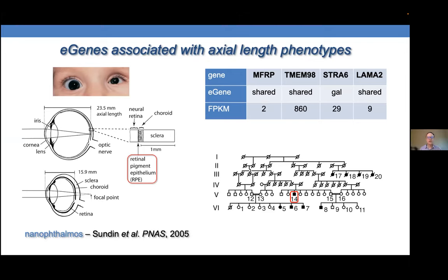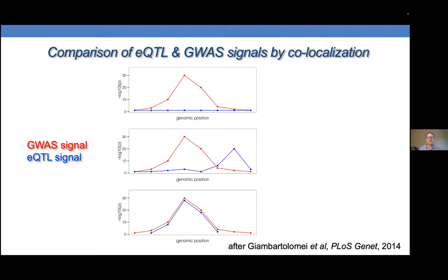With respect to complex disease, the co-localization approach is very powerful for understanding loci from GWAS studies. One can rigorously ask the degree of congruence between the eQTL signal and the GWAS risk signal in a genomic region. This approach helps identify the gene underlying risk at a locus, provides insight into mechanism by determining whether the risk allele is associated with increased or decreased expression, and helps narrow down which tissues may be responsible for the pathogenic mechanism.